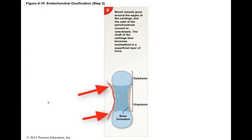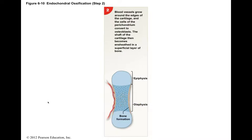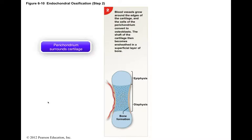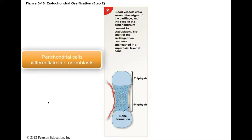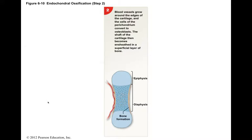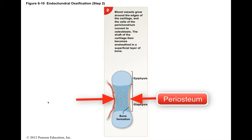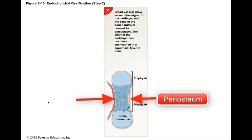In step two, blood vessels grow into the perichondrium surrounding the shaft of the cartilage. The perichondrium surrounds cartilage. We had heard about periosteum that surrounded bone. It's the same dense, irregular connective tissue, but because it's surrounding cartilage, we call it perichondrium instead of periosteum, which surrounds bone. The cells of the inner layer of the perichondrium differentiate into osteoblasts. These osteoblasts begin producing a thin layer of bone around the shaft of the cartilage. Now we'll call the perichondrium periosteum because it covers bone rather than cartilage, and we end up with a thin sheath of bone in the diaphysis that's surrounded by periosteum.